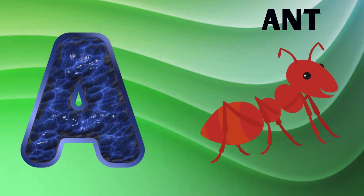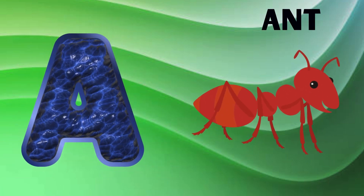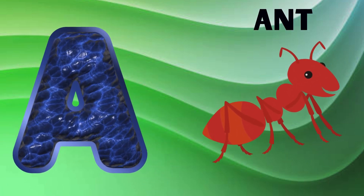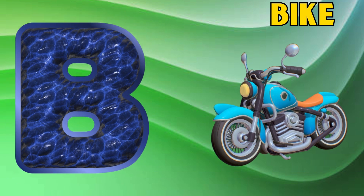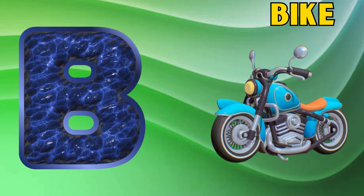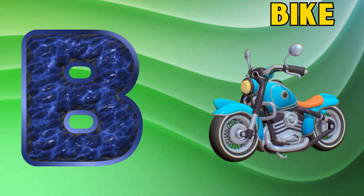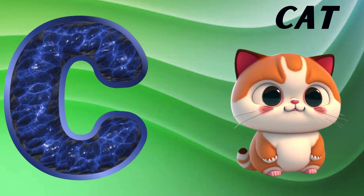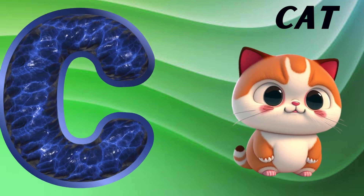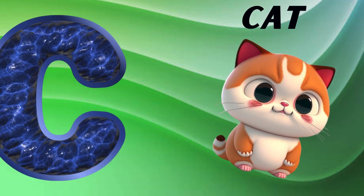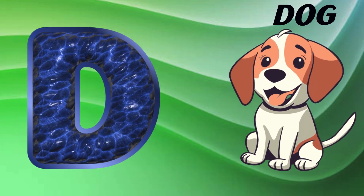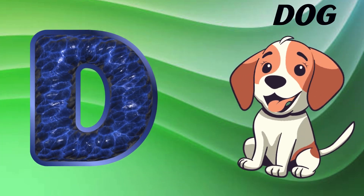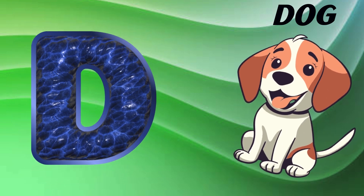A is for ant, a-a-ant. B is for bike, b-b-bike. C is for cat, c-c-cat. D is for dog, d-d-dog.